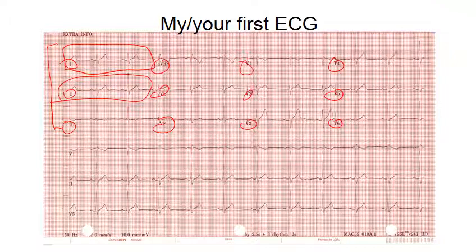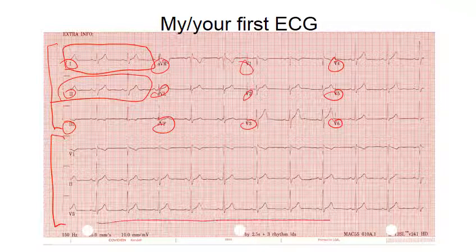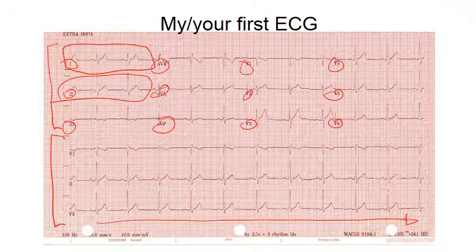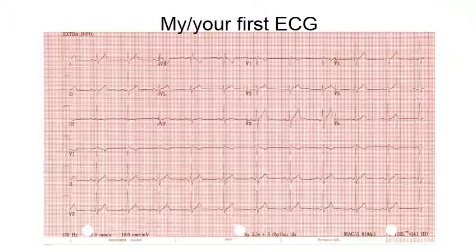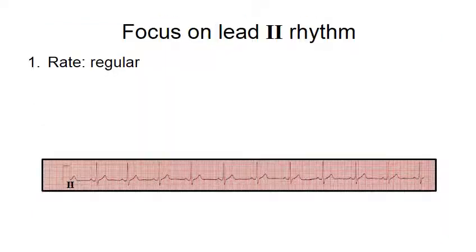The bottom three represent the rhythm strips. This is recorded for a much longer period of time so you can determine what's going on more precisely. When you're looking at an ECG like this, first focus on lead 2 rhythm strip. In this particular case, this looks like a regular rhythm.